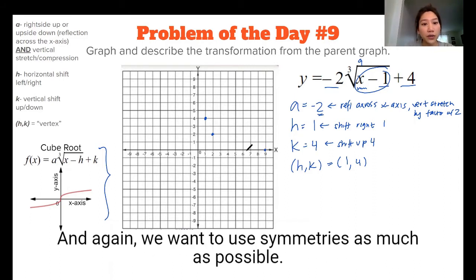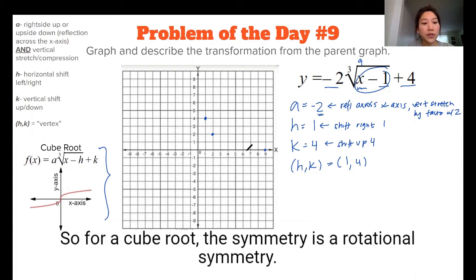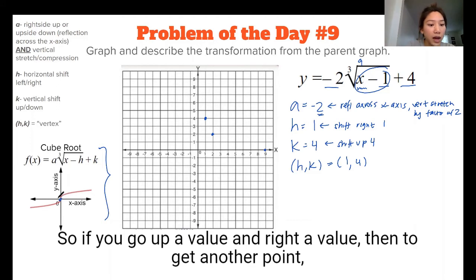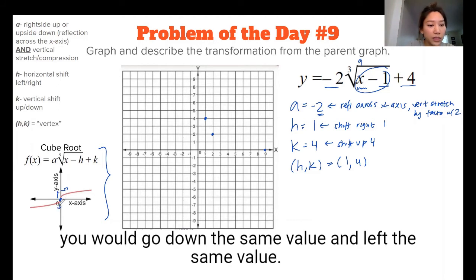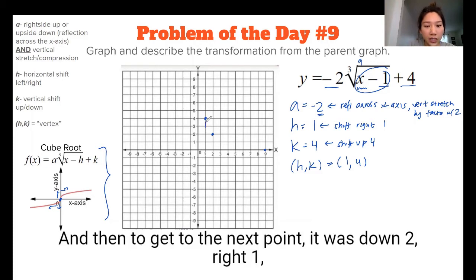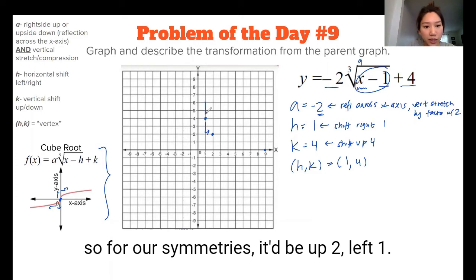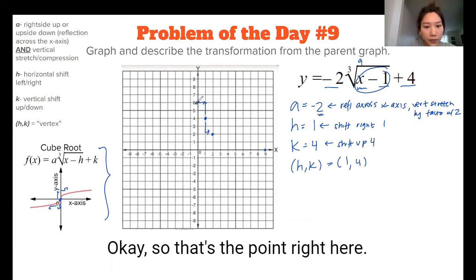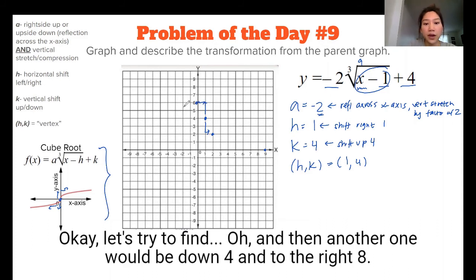And again, we want to use symmetries as much as possible. So for a cube root, the symmetry is a rotational symmetry, right? So if you go up a value and right a value, then to get another point, you would go down the same value and left the same value. So this was our vertex here at the 1 comma 4, and then to get to the next point, it was down to right 1. So for our symmetries, it'd be up to left 1.